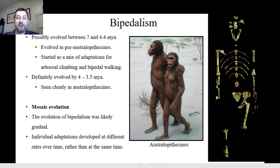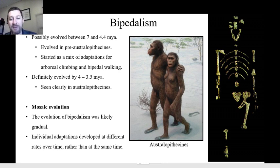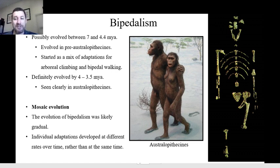When did bipedalism show up? We're not exactly sure. It's possible that the first bipedal species may have evolved between 7 and 4.4 million years ago in pre-australopithecine species — in that case it would have been a mix of adaptations for arboreal climbing and bipedal walking. But it definitely evolved by somewhere between 4 and 3.5 million years ago because australopithecines have a large number of the necessary adaptations for bipedalism. On the far right there we have the skeleton of Lucy, which you may have heard of — if you've ever heard of the idea of the missing link, Lucy was the first habitual biped ancestor discovered as a fossil, and she has all these adaptations. She's relatively complete — we were able to tell from her skeleton that she had all the traits necessary to walk upright.